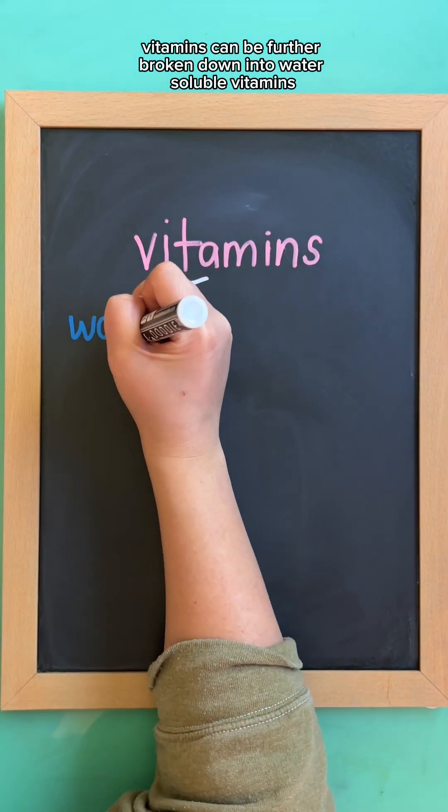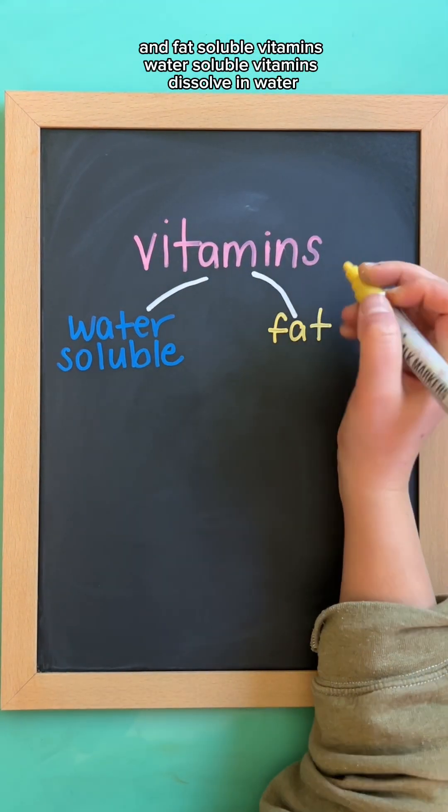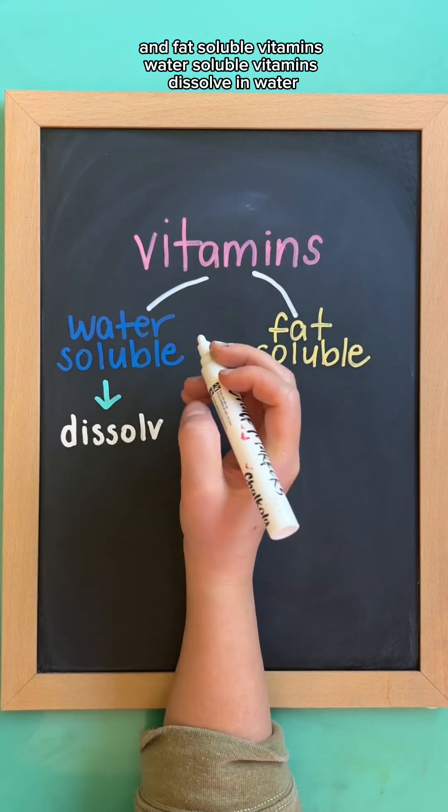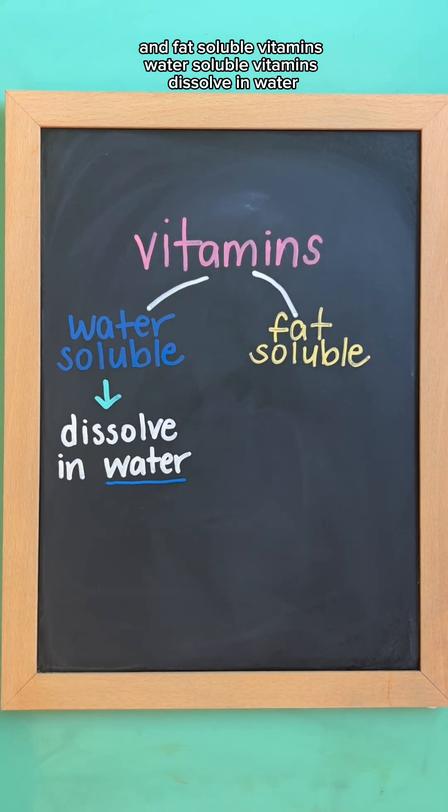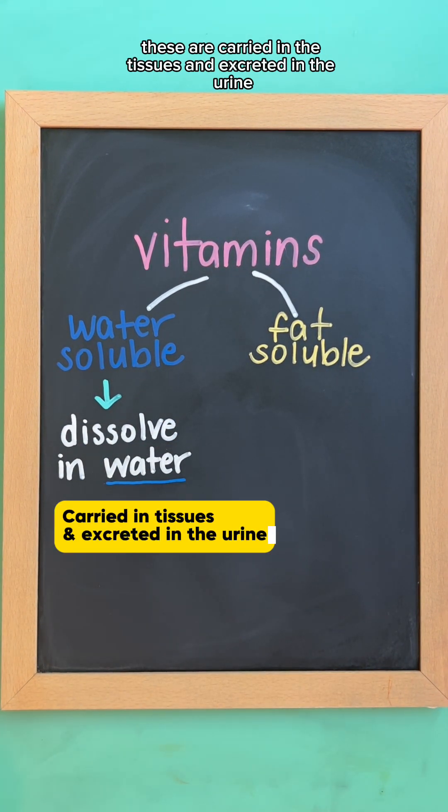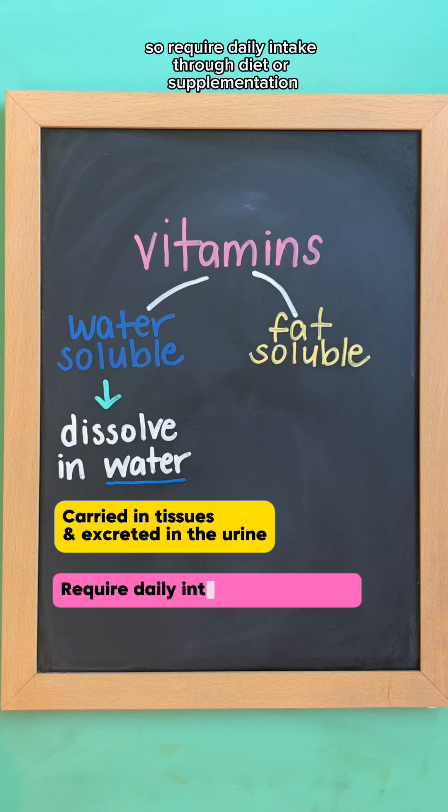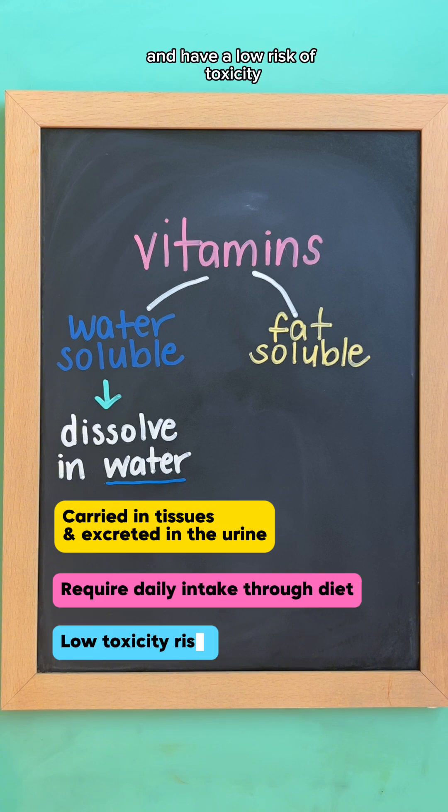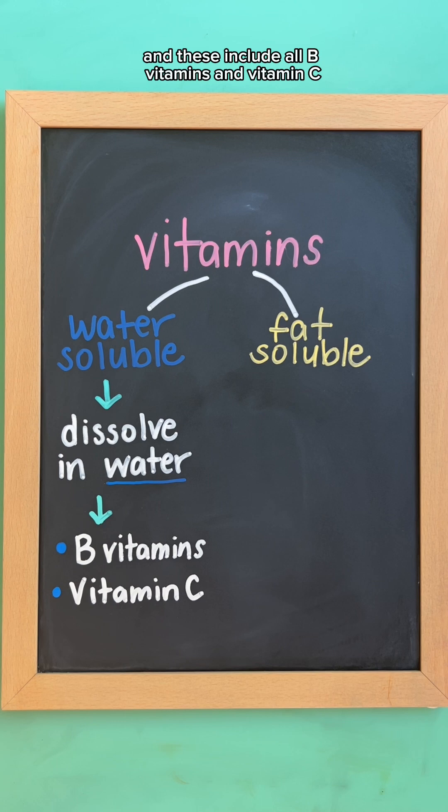Vitamins can be further broken down into water-soluble vitamins and fat-soluble vitamins. Water-soluble vitamins dissolve in water. These are carried in the tissues and excreted in the urine, so require daily intake through diet or supplementation, and have a low risk of toxicity. These include all B vitamins and vitamin C.